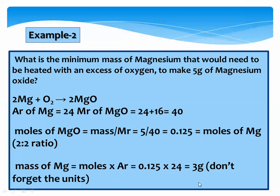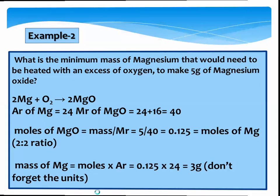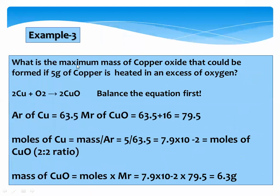Don't forget the unit — it is grams. For mass we use the unit gram. Example number 3: What is the maximum mass of copper oxide that would be formed if 5 grams of copper is heated in excess oxygen? Write the equation: copper Cu plus oxygen gives copper oxide. Check the number of atoms: 2 copper react with 1 mole of oxygen to give 2 moles of copper oxide. Balance the equation first.